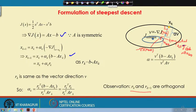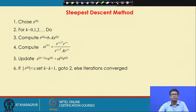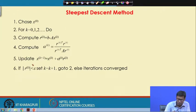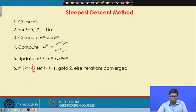We have found how to compute alpha_k for one iteration. The steepest descent algorithm is: start with a guess x_0, then iterate k = 0, 1, 2, ... until convergence. Compute r_k = b minus A x_k; compute alpha_k = r_k-transpose r_k divided by r_k-transpose A r_k; update x_{k+1} = x_k + alpha_k r_k; check if the norm of r_k is less than epsilon. If not small enough, set k = k+1 and repeat.